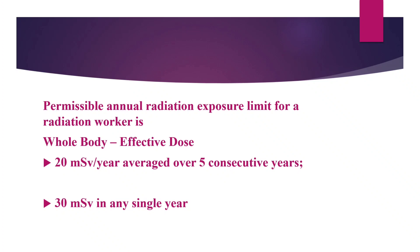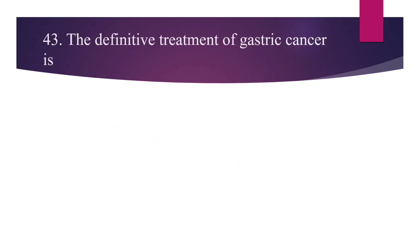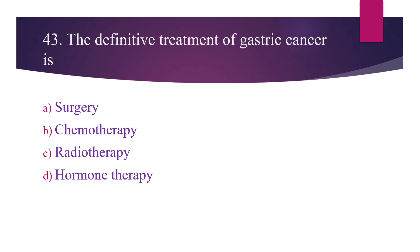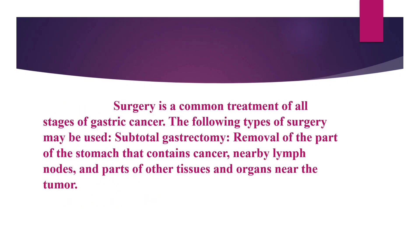Question number 43: The definitive treatment for gastric cancer is — Option A: surgery, Option B: chemotherapy, Option C: radiotherapy, Option D: hormone therapy. The answer is Option A — surgery.